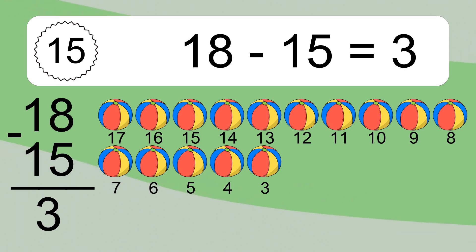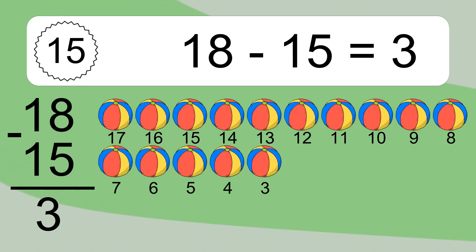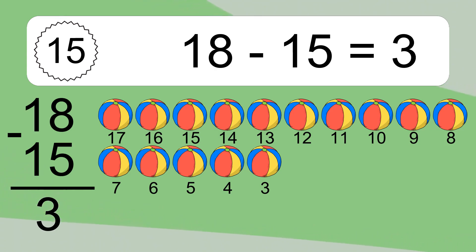18 minus 15 equals 3. Let's count it: 17, 16, 15, 14, 13, 12, 11, 10, 9, 8, 7, 6, 5, 4, 3.